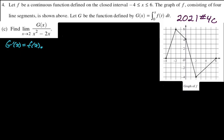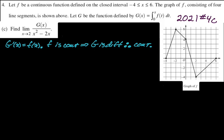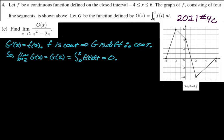Since F is continuous, the derivative of G exists everywhere, which means G is differentiable, and therefore G is continuous. Since G is continuous, the limit as x approaches 2 of G(x) equals G(2) = ∫₀² F(t) dt. Looking at the graph, there's a triangle above the x-axis and a triangle below with equal areas, so they cancel and the limit equals 0.